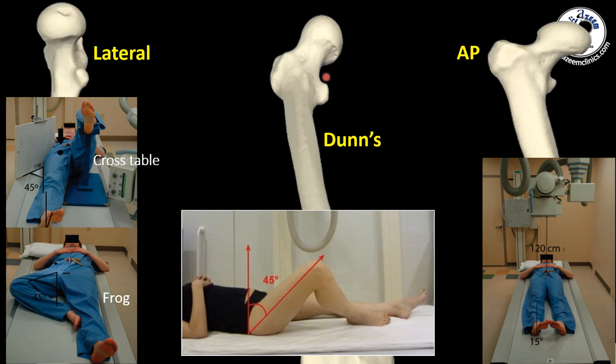With more internal rotation and extension, especially in an internally rotated hip, the AP view will show you the twelve o'clock position, or the shoulder of the head and neck junction. With more internal rotation, you can get even more of the posterosuperior view, or the eleven o'clock position. So you have to understand which view will show you which part of the head and neck junction.